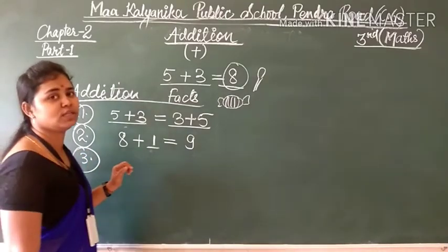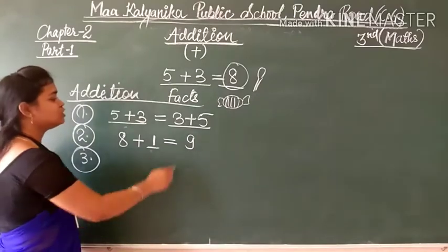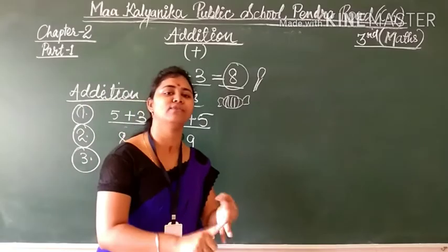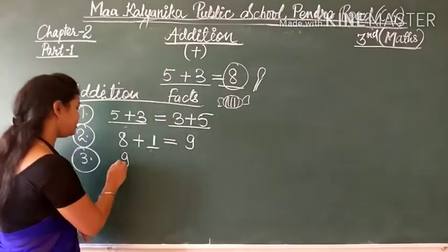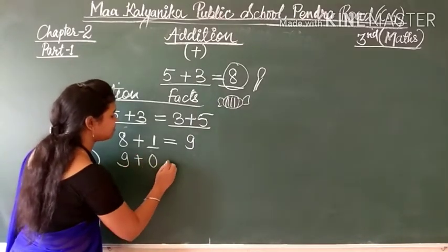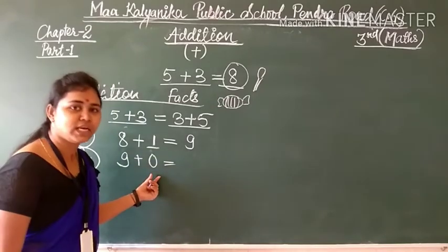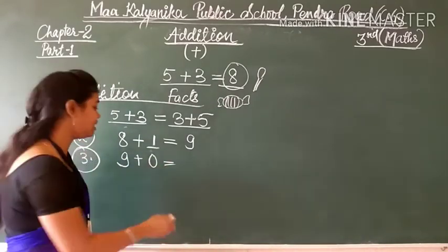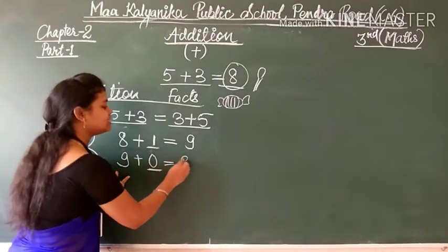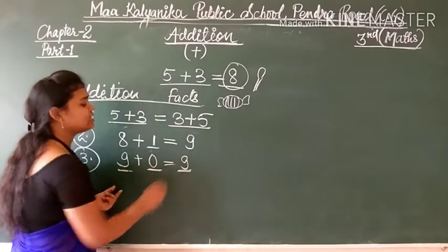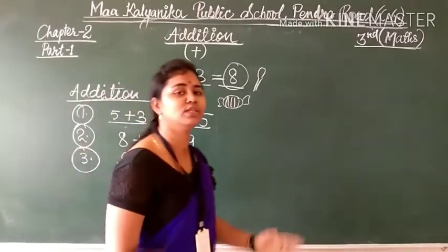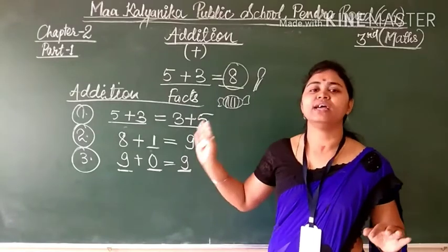Now the third fact of addition. You have received 9 chocolates from mama, papa, and a friend. Now if I tell you 0 chocolates are given by another friend — 0 means nothing. If 0 is added to any number, the answer is the same number. So these are the three facts of addition. I hope you have understood.